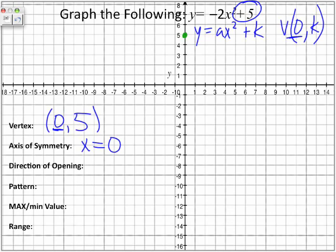Now, in terms of the direction of the opening, well, what is our a value? And our a value is a negative value. So the a value is negative, so therefore, because the a value is negative, the parabola is going to go in a downward position.